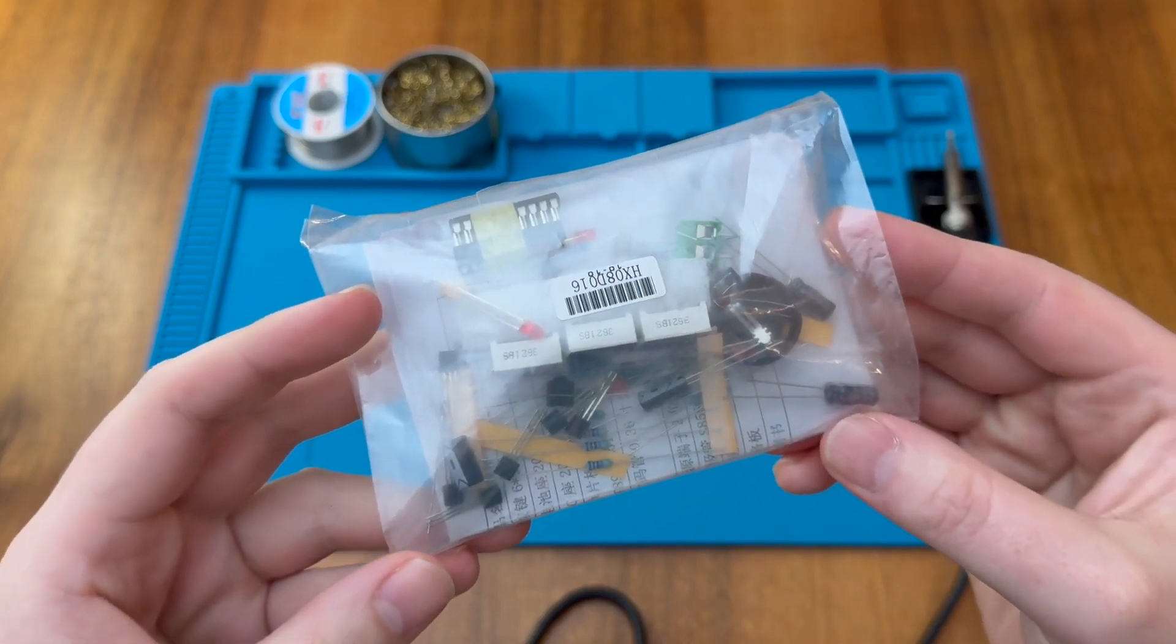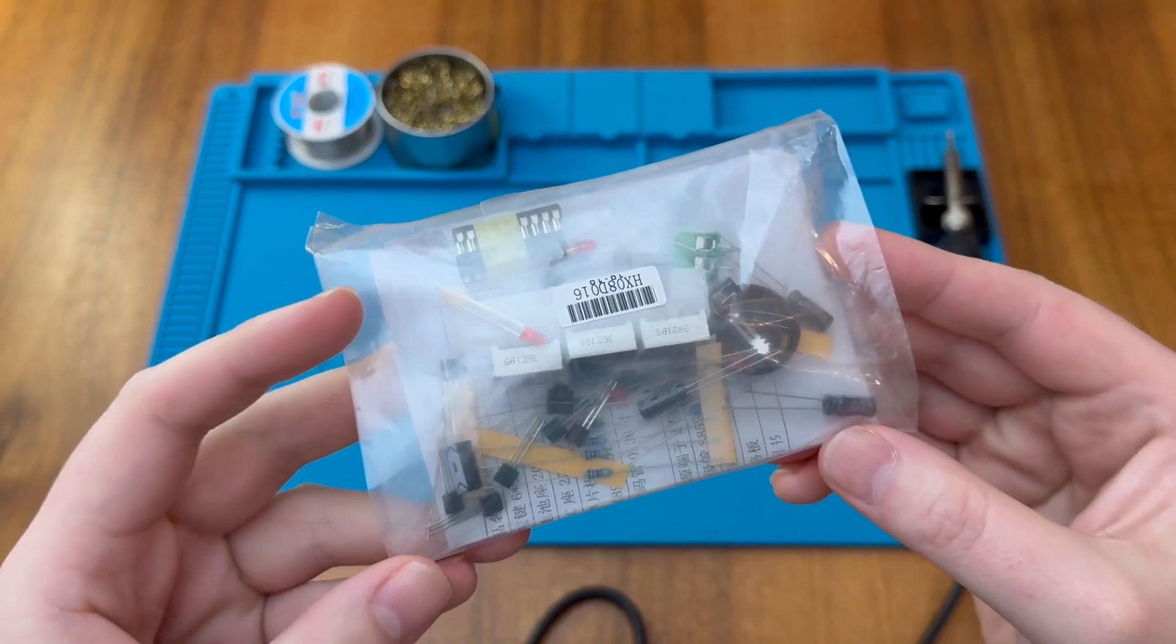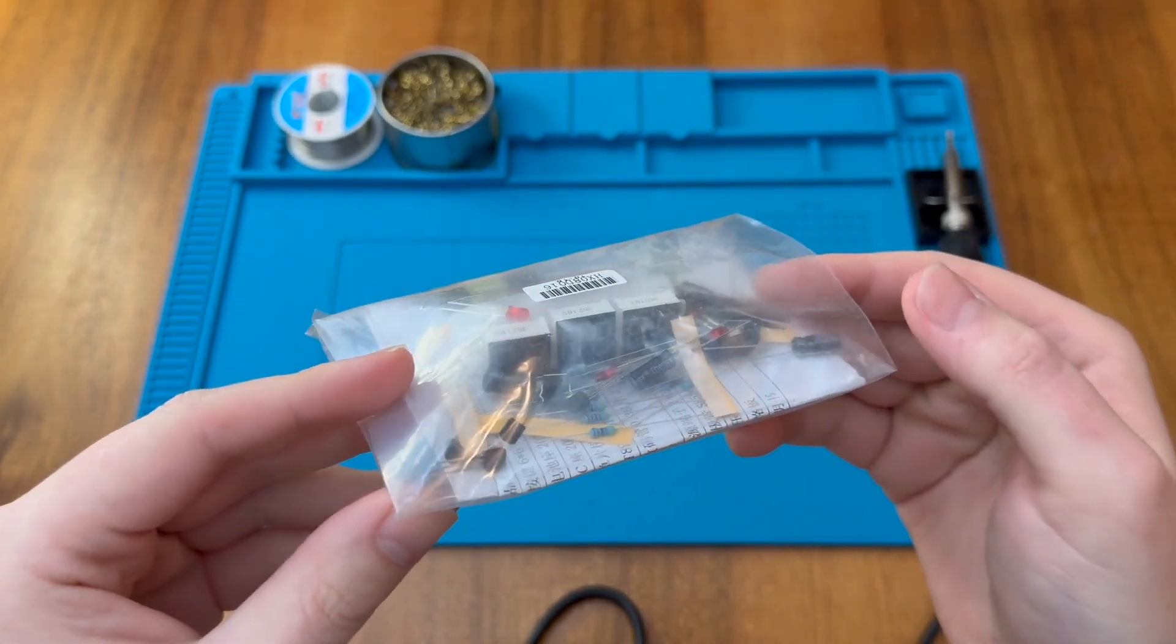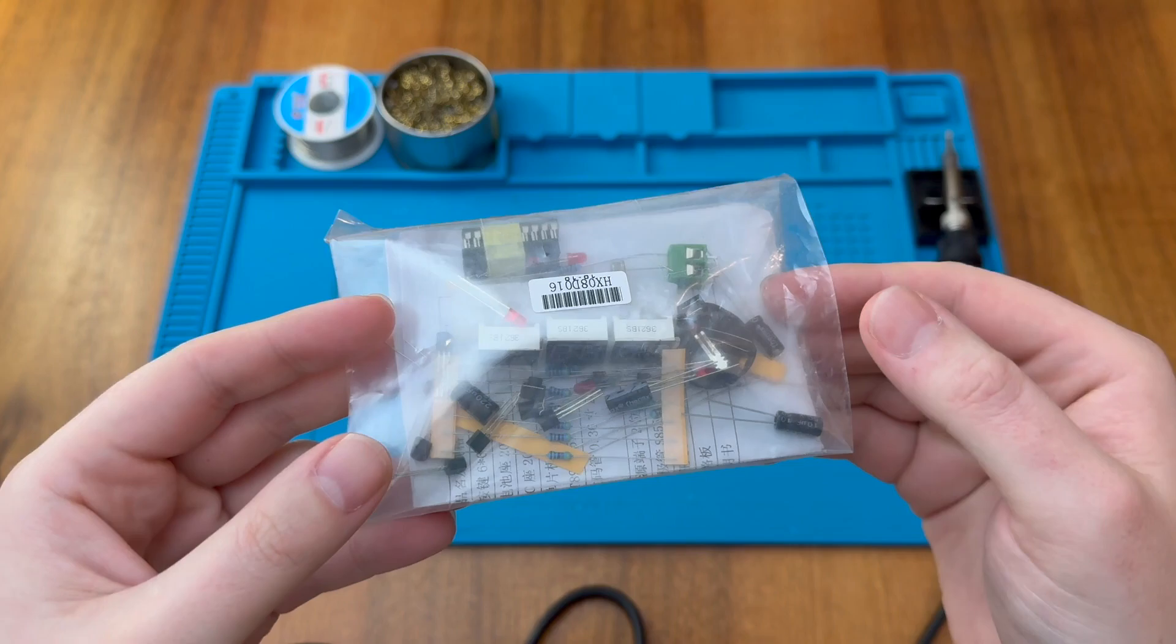This is a DIY soldering clock kit. They're available from AliExpress for around £2.50, but I thought this would make a neat little project for us to assemble today. So let's get started.